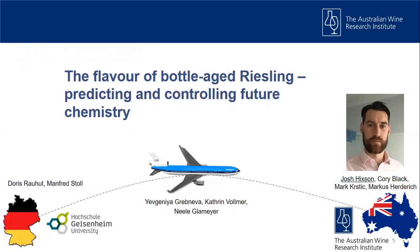As Michael said, we're looking at TDN bottle-aged Riesling. This is a project we've been working on for a while now, ongoing between us here at the Australian Wine Research Institute and academics over at Geisenheim University in the Rheingau region of Germany. A number of students have moved between the two, including Evgenia, whose master's and ongoing PhD form a lot of the work today.